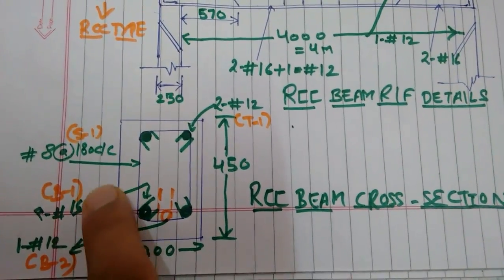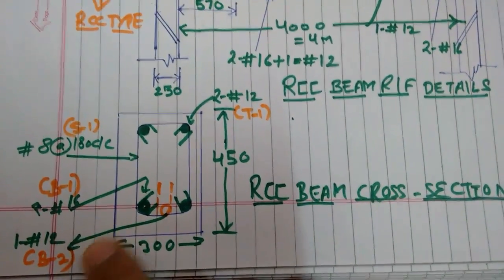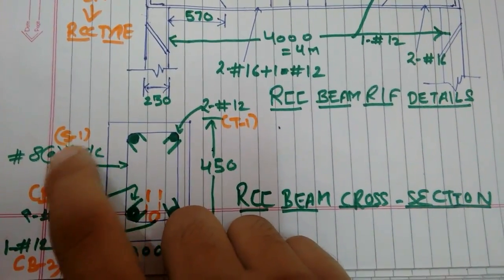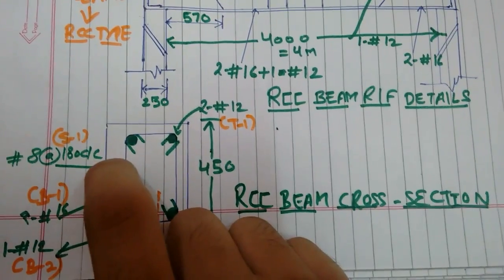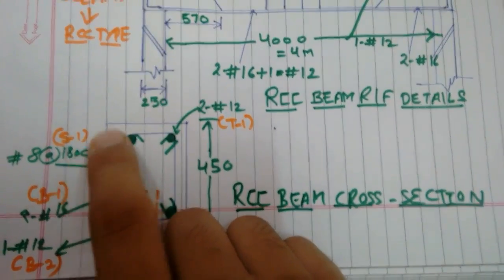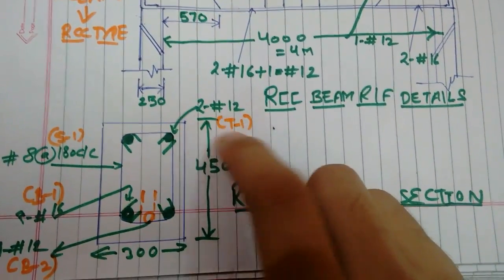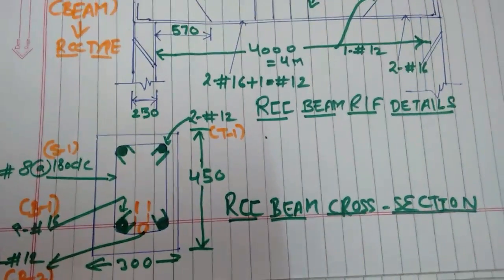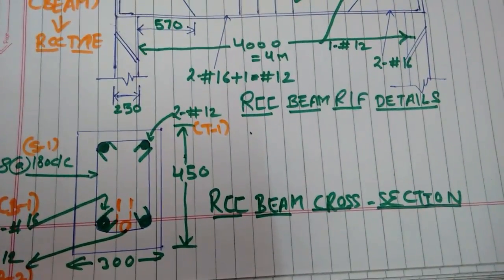We have named this bar as B1 and this is B2. This is stirrups, 8mm at 180mm center to center spacing named as S1, and this bar named as T1. So we will start from bottom reinforcement, that is B1.